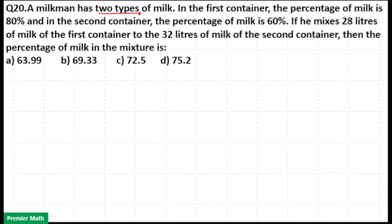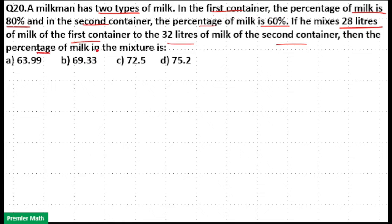A milkman has two types of milk. In the first container, the percentage of milk is 80%, and in the second container, the percentage of milk is 60%. If he mixes 28 liters from the first container and 32 liters from the second container, what is the percentage of milk in the mixture?